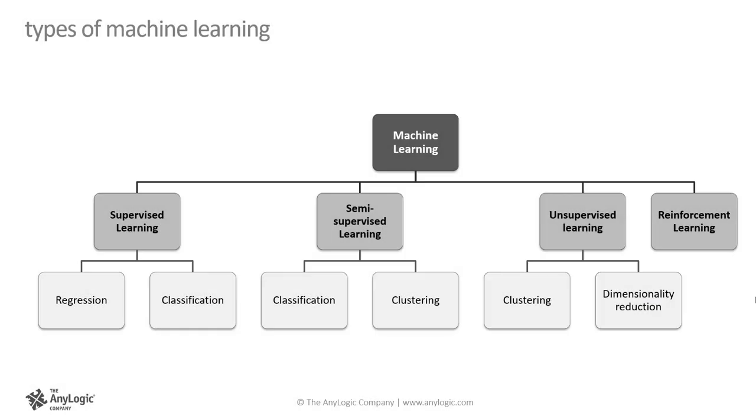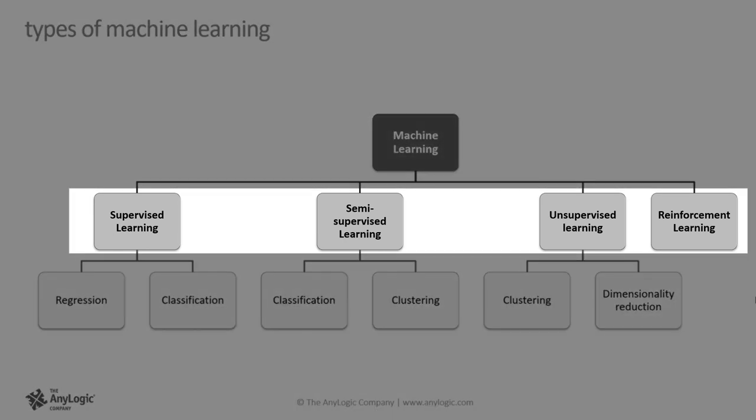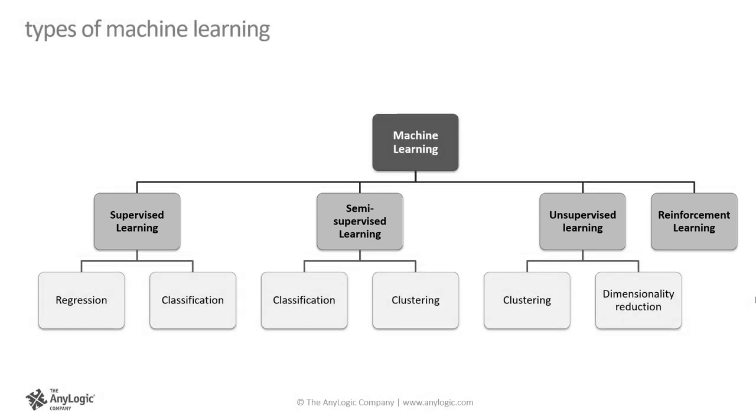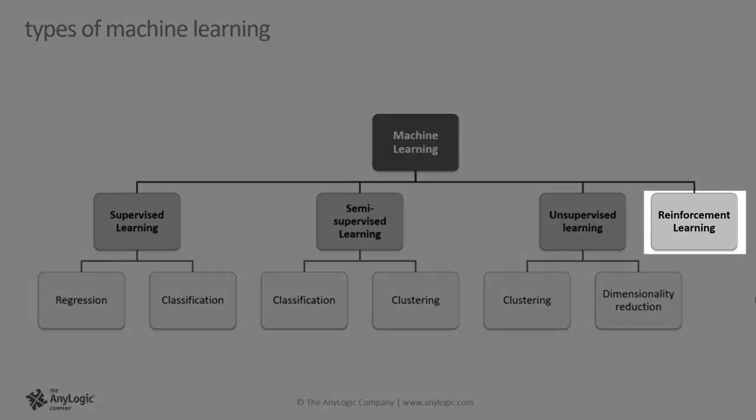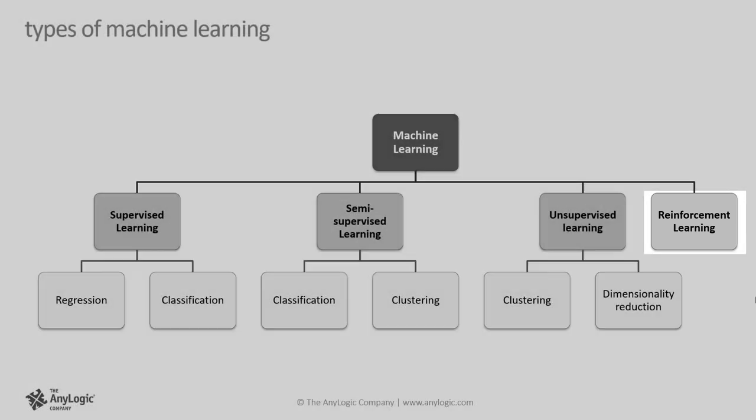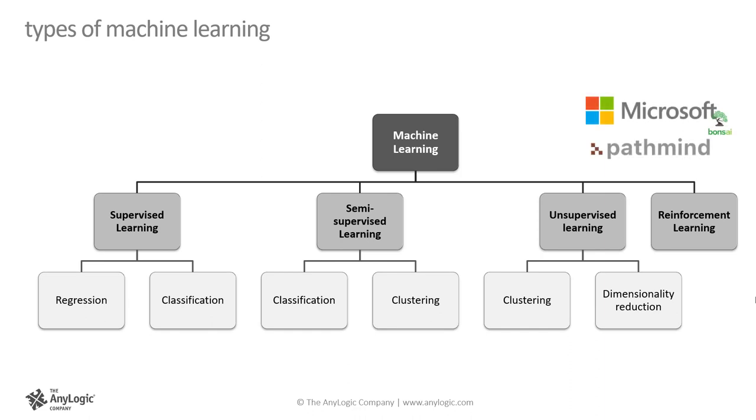I assume that majority of this webinar's audience have some level of familiarity with both simulation modeling and machine learning. But just in case, let's quickly review them. Machine learning is based on algorithms that are capable of extracting patterns from data. The extracted pattern is then used for different forms of predictions. There are many types of machine learning. As I'm showing in this chart, the main types are supervised learning, semi-supervised learning, unsupervised learning, and reinforcement learning.